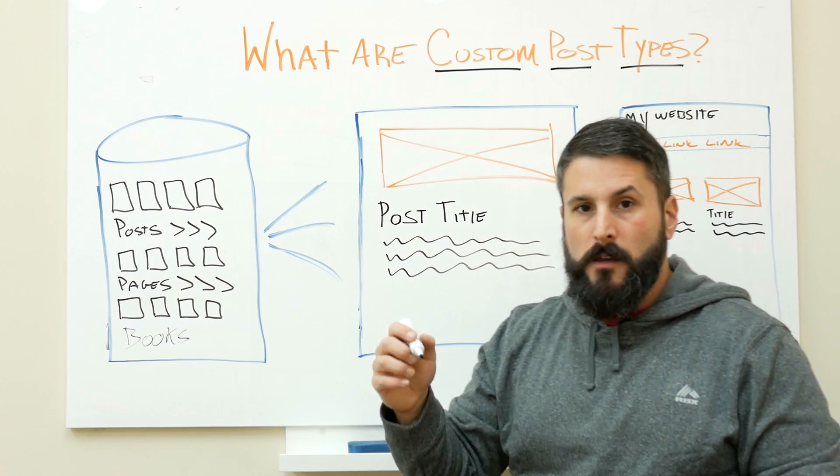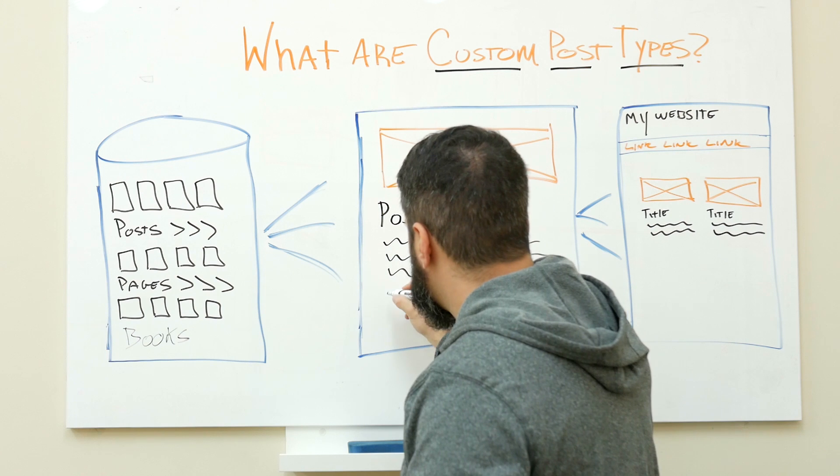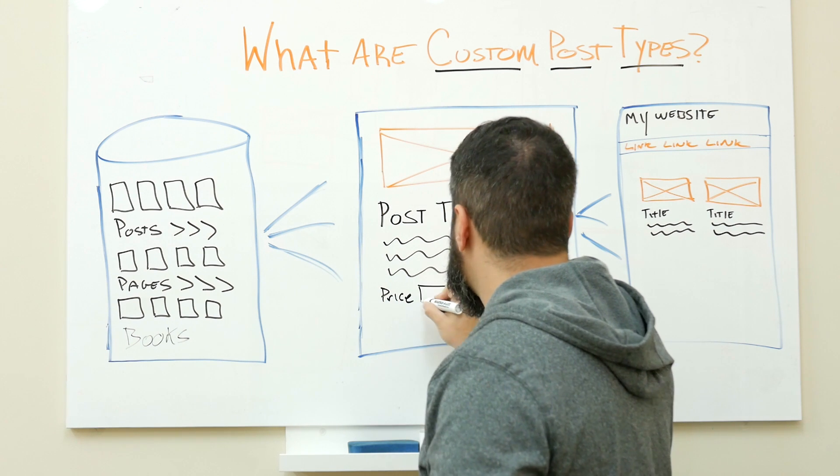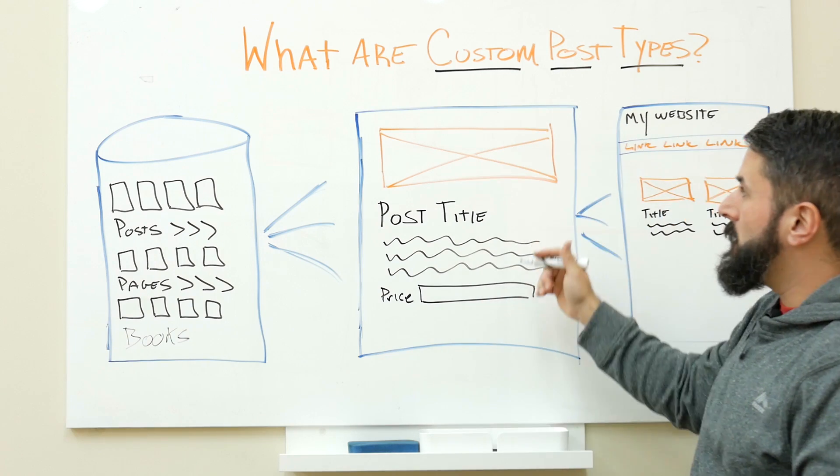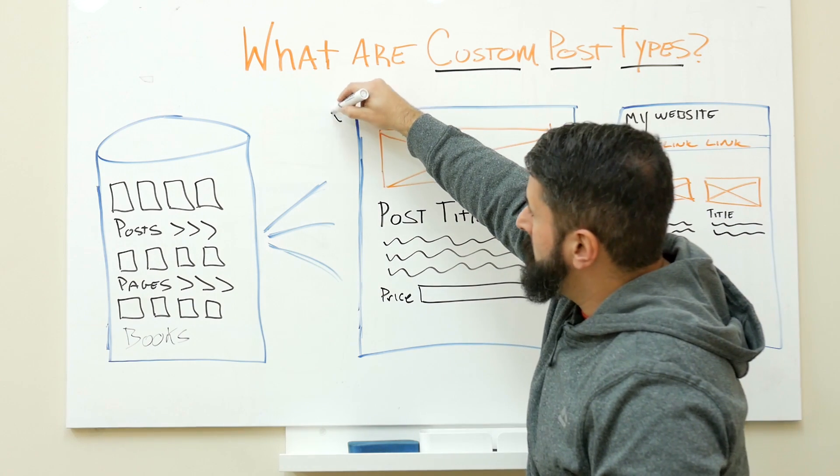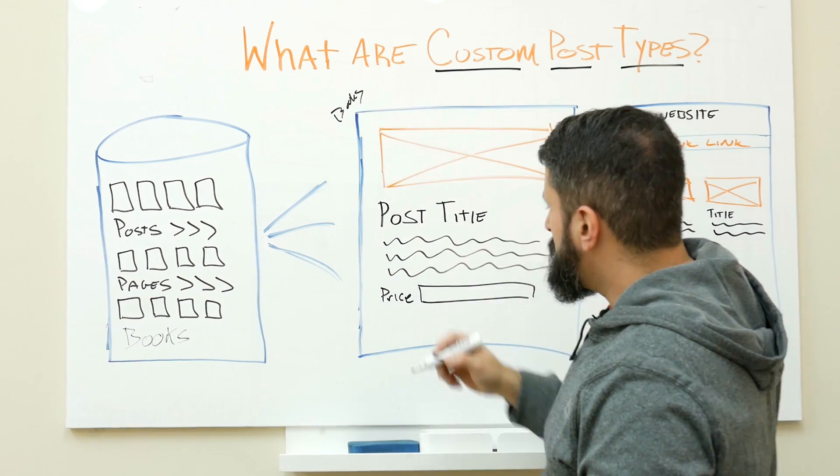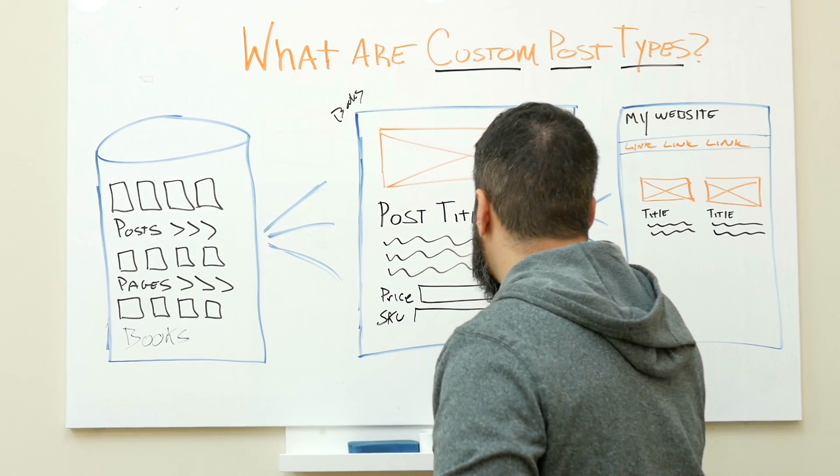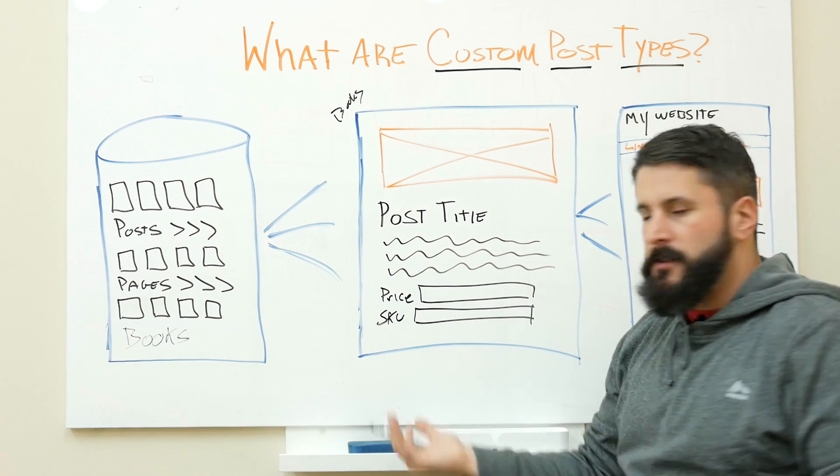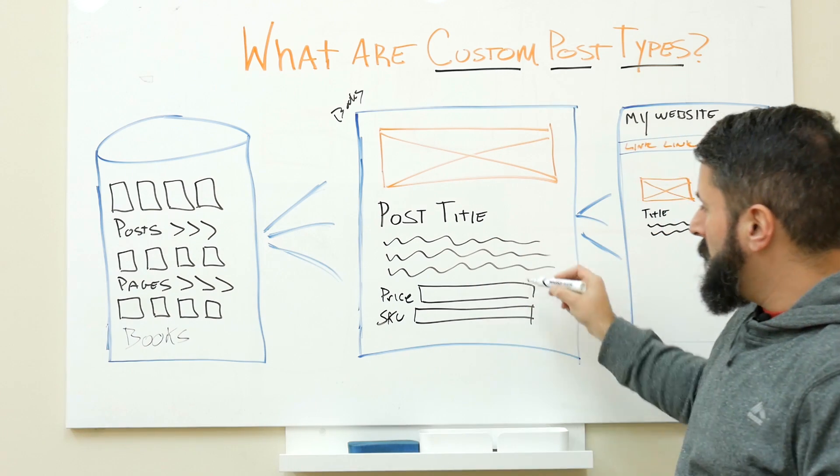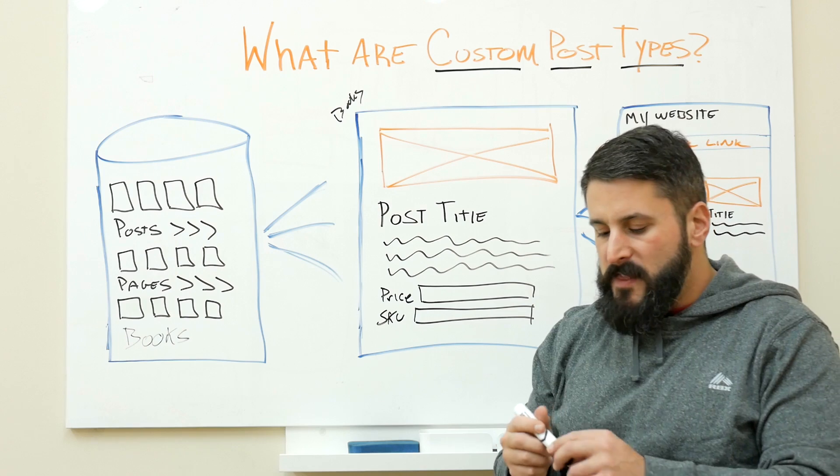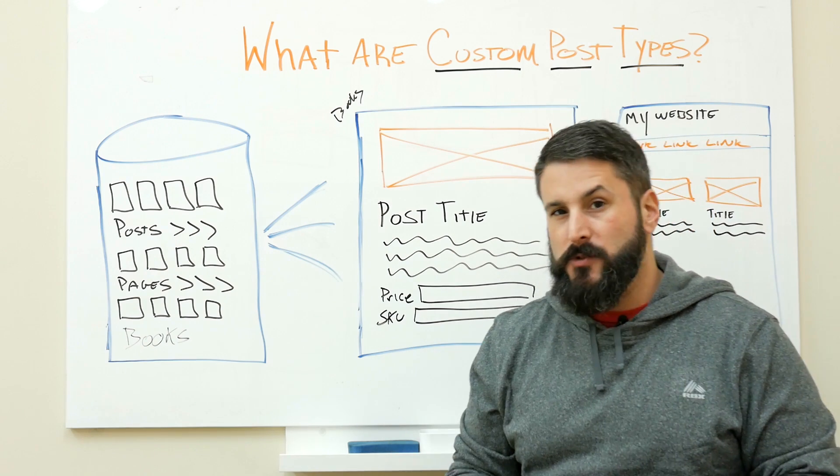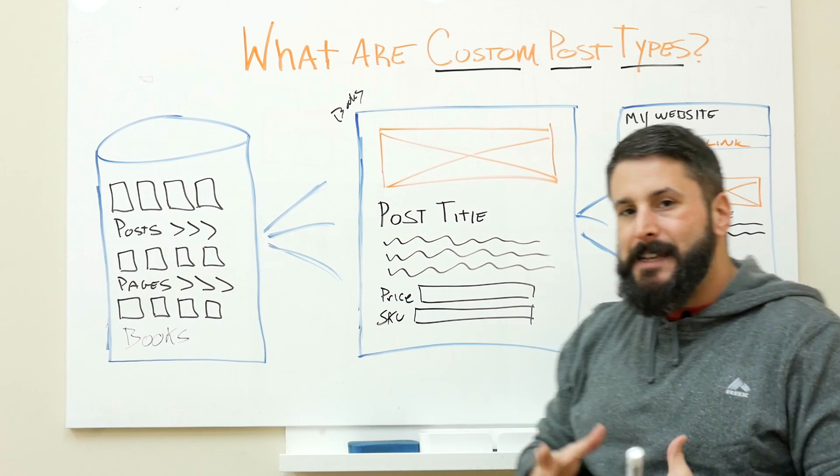What do we do with books? We might actually have a price, so we might add a price field inside of this custom post type called books. Along with price, we might do something like SKU number and so on. So we might just add these custom fields to this post type.